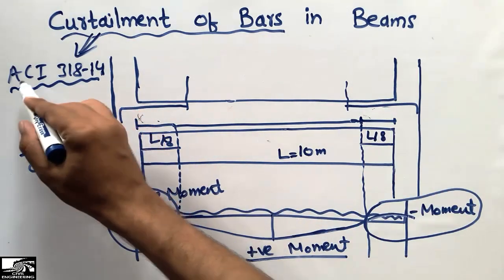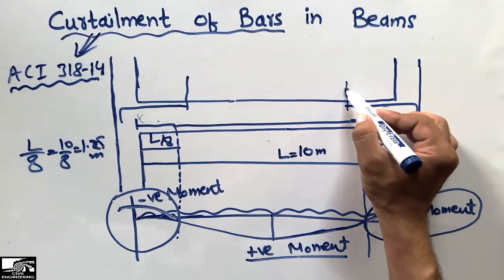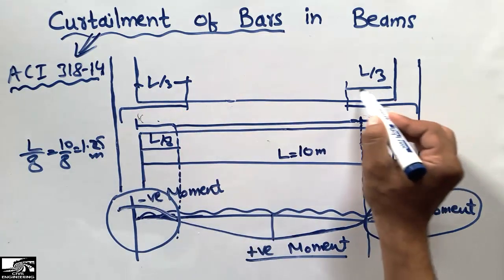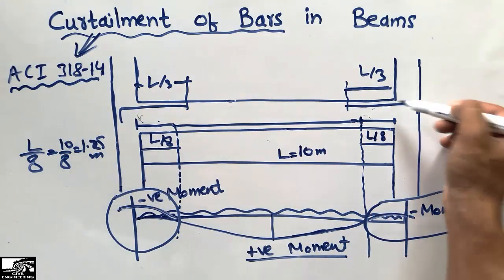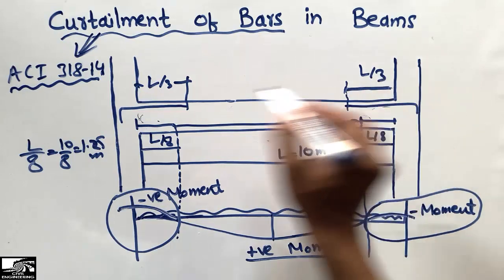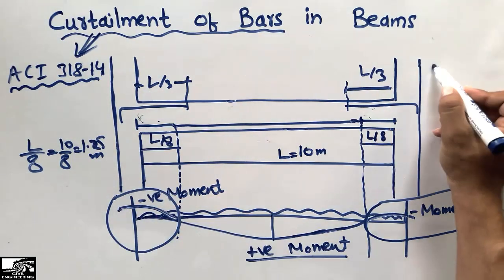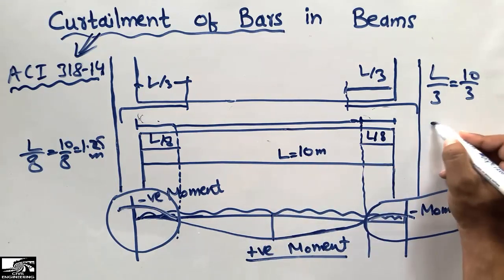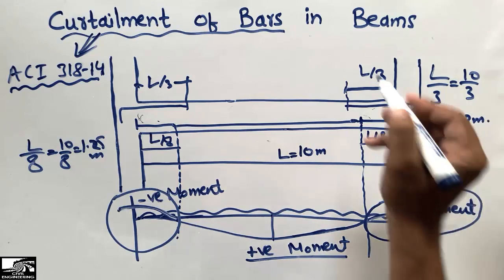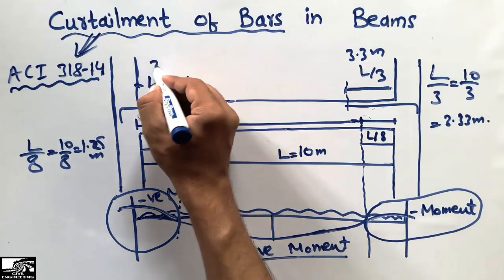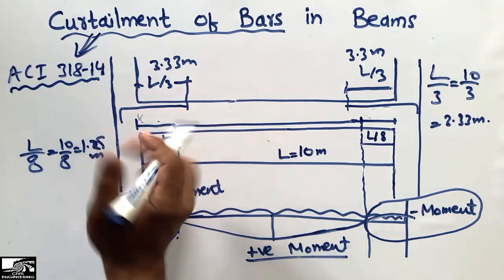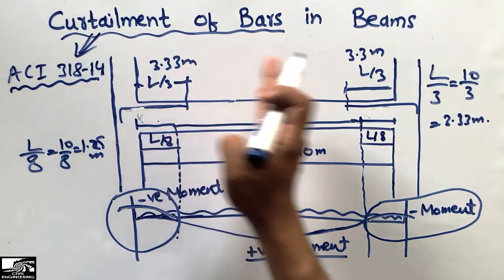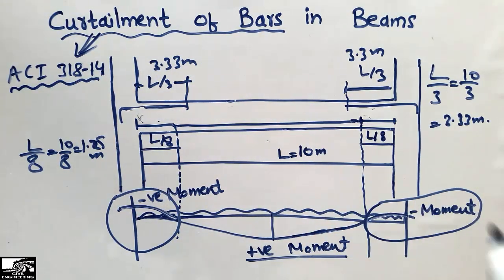The distance recommended by ACI 318-14 for the top (negative) bars is L/3 from each support. These bars should extend out from the column face up to a distance of L/3. If the beam length is 10 meters, then L/3 equals 10/3, which equals 3.33 meters. So the negative reinforcement bar should not extend beyond 3.33 meters from the column.